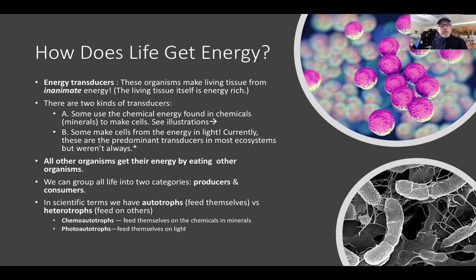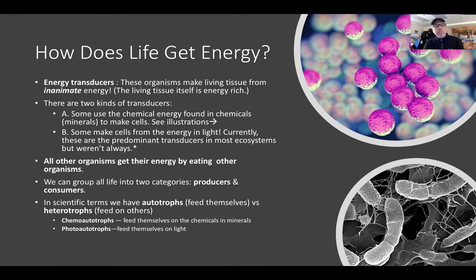Within autotrophs, we define two kinds: chemoautotrophs, which feed themselves on chemicals, versus photoautotrophs, which feed themselves on light. That vocabulary you should know now — these long words are easier once you understand what they mean. Chemoautotrophs: chemical self-feeders. Photoautotrophs: light self-feeders.